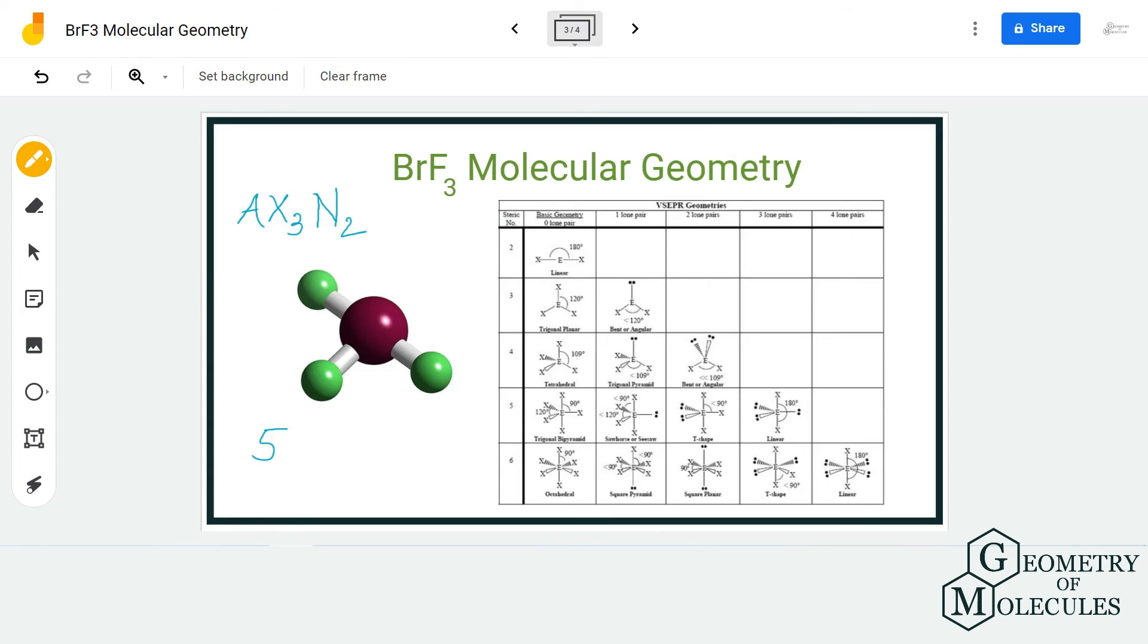As it is a steric number of 5, because it is forming bonds with three fluorine atoms and there are two lone pairs of electrons, in total the steric number is 5 and it has two lone pairs. That means it has a T-shaped molecular geometry.